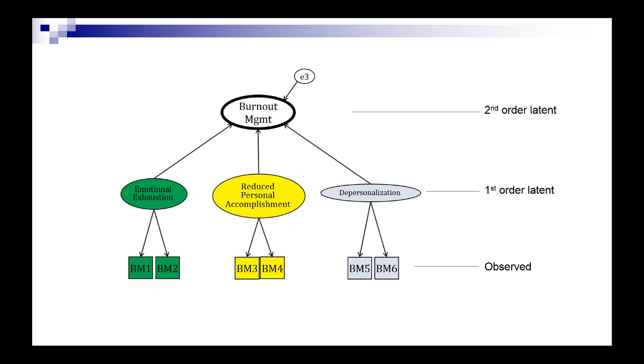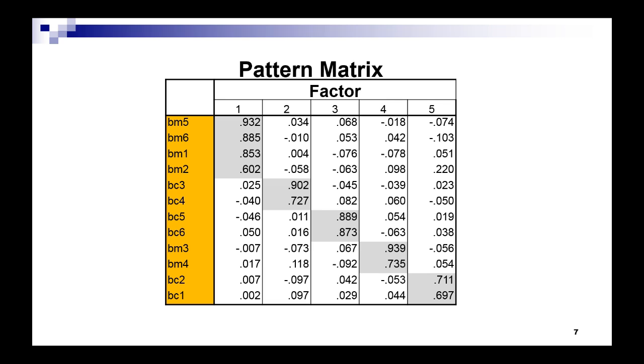And that's why we see the pattern matrix like this. Each dimension essentially gets its own factor, except factor one. What's the deal with that? It gets two dimensions. Well, it just so happens that these four items are highly correlated, and that's why they factor together.